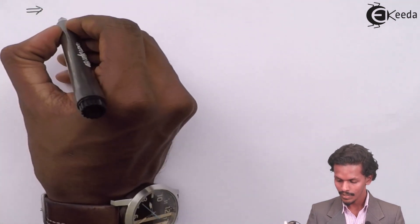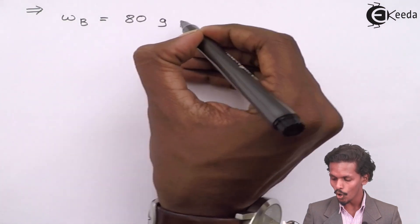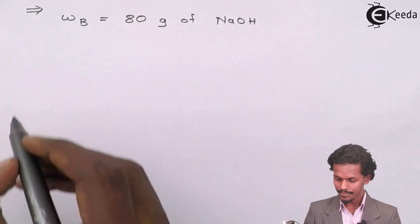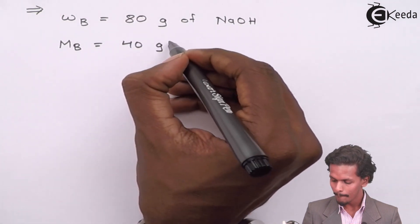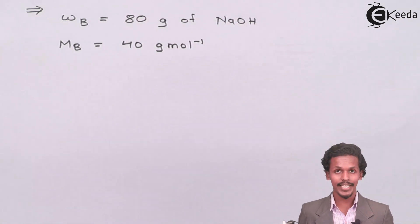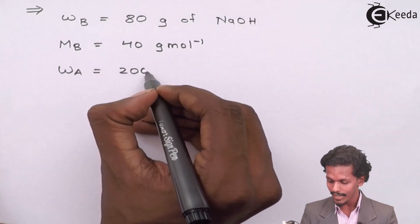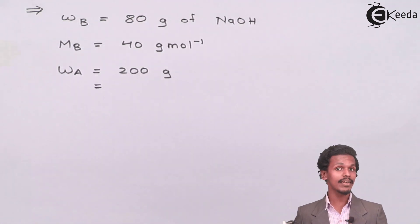The given details in the question are: the weight of solute is 80 grams of NaOH, the molecular weight of solute is 40 grams per mole, and the weight of solvent is 200 grams. But we should know that we should convert these grams into kilograms, so therefore this is 200 × 10^-3 kg.